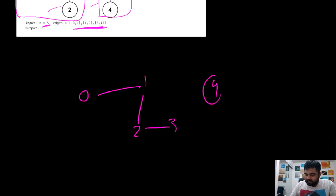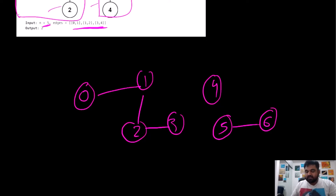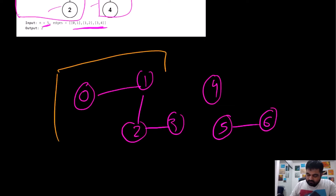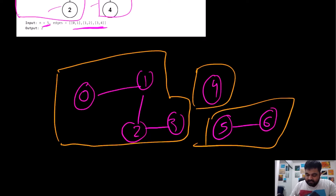Suppose we have a custom example with nodes zero, one, two, three forming one connected component. Then there is one more isolated node, and then one more component with nodes five and six. In this case, we can find three different connected components: one, two, and three. So we would iterate over the input and say there exist three separate connected components.